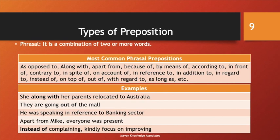The last type is phrasal preposition, which is a combination of two or more words. The most common phrasal prepositions are: as opposed to, along with, apart from, because of, by means of, according to, in front of, contrary to, in spite of, on account of, in reference to, in addition to, in regard to, instead of, on top of, out of, with regard to, as long as, etc. Examples: 'She, along with her parents, relocated to Australia' — along with is the phrasal preposition. 'They are going out of the mall' — out of is the phrasal preposition. 'He was speaking in reference to the banking sector' — in reference to is the phrasal preposition. 'Apart from me, everyone was present' — apart from is the phrasal preposition.